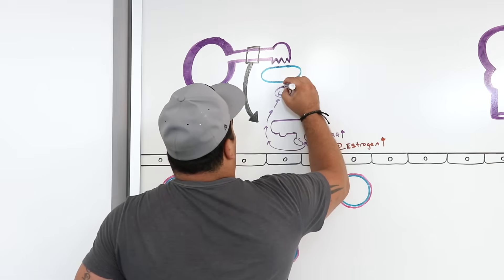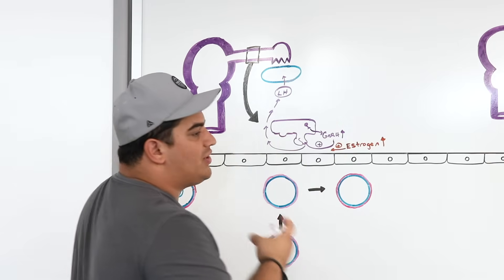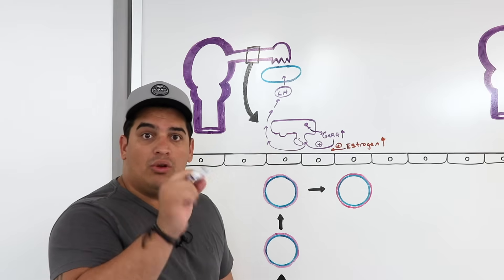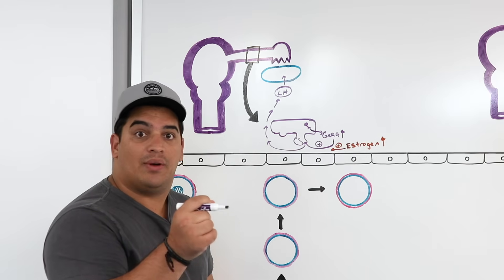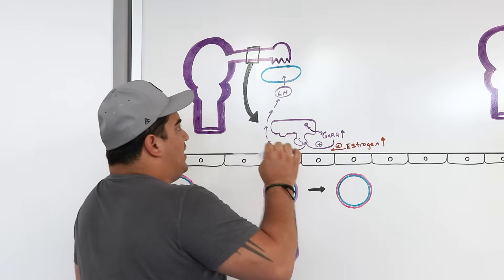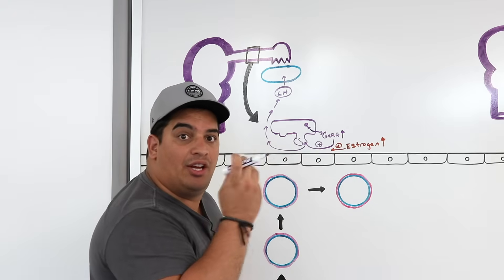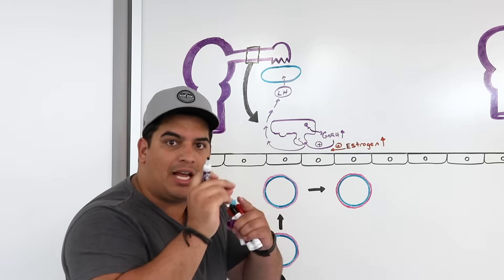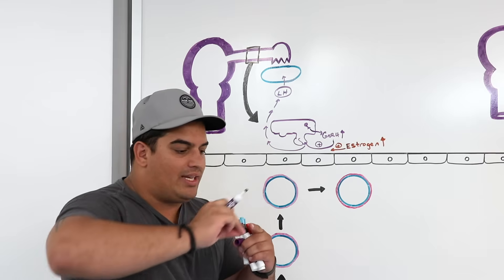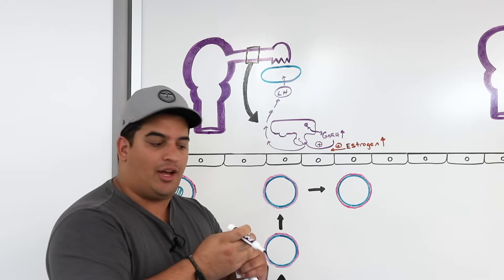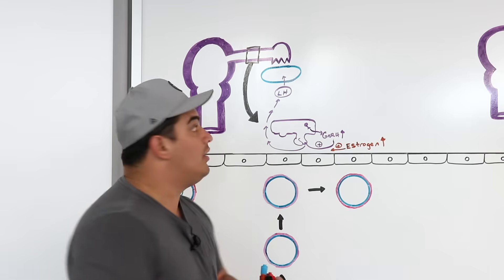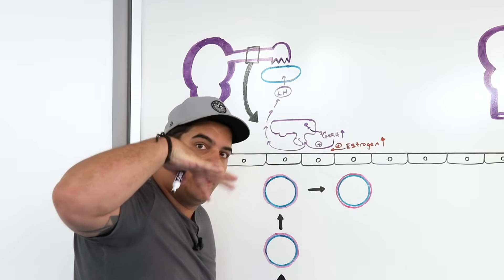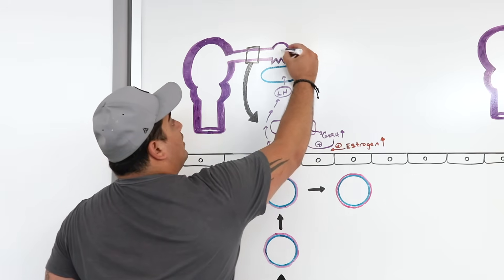Luteinizing hormone is released into the blood and travels down to the ovary. It tells the ovary to start producing a lot of fluid and pressurize that follicle — the Graafian follicle containing the secondary oocyte. It triggers the release of prostaglandins to dilate vessels and increase capillary leakiness around that follicle, and activates metalloproteinases to break down the connective tissue, helping to pop that oocyte out. The fimbriae then move the oocyte toward the ampulla.